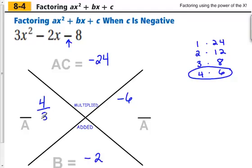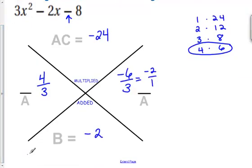We still follow the same process by bringing our a and then simplifying. So 4 thirds cannot be simplified. Negative 6 over 3 can be simplified as negative 2 over 1. And we can write this now in the factored form. 3x plus 4 is our first value, and then our second value is going to be 1x minus 2.